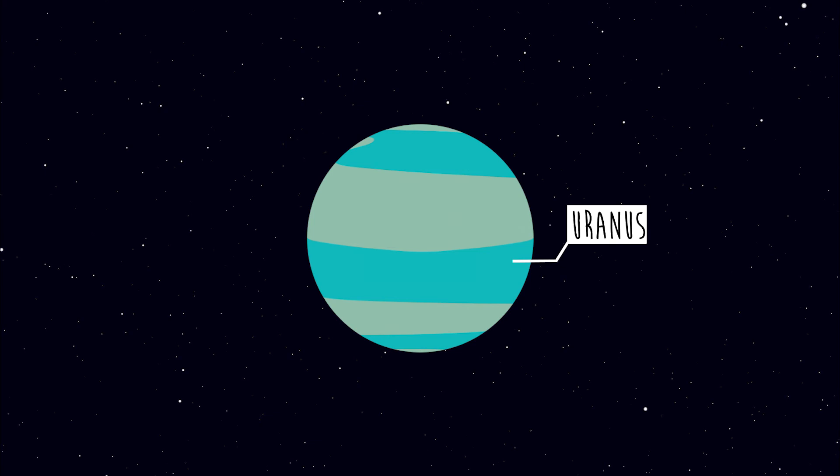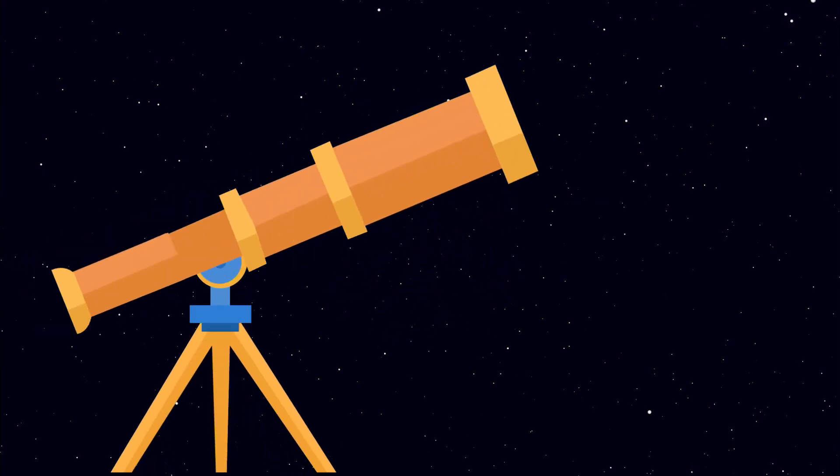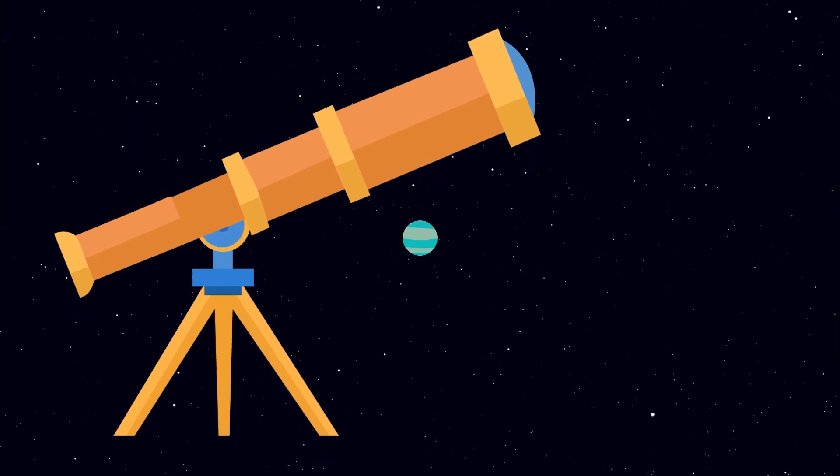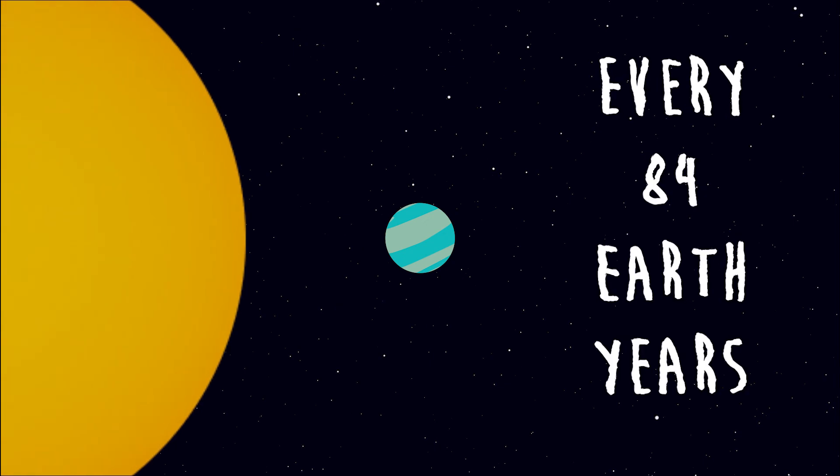Uranus is the seventh planet from the Sun. It is also the first planet to be discovered by the use of a telescope. It makes one trip around the Sun every 84 Earth years.